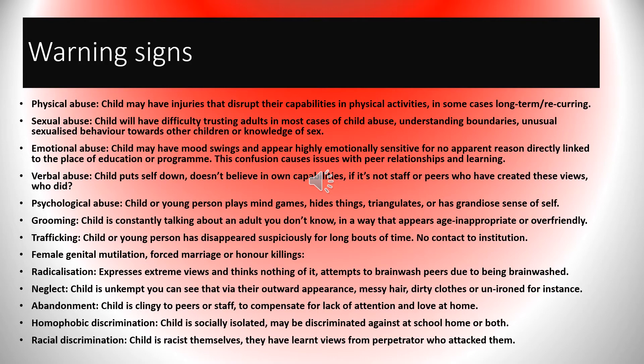Female genital mutilation can be really hard to recognise. Signs can include a child being quite secretive and oppressed, not talking about things very much. I think if you educate young people on safeguarding with the resources I've provided, you're more likely to help them through the process. I've also provided a PowerPoint with links that detail these issues in more depth.